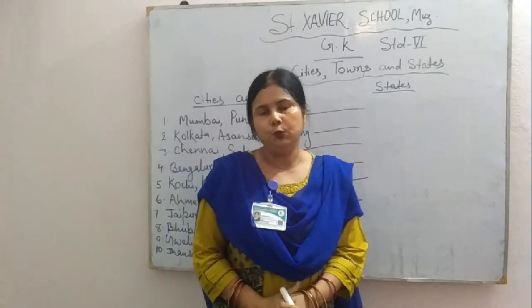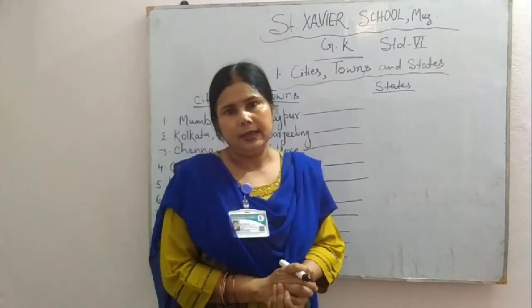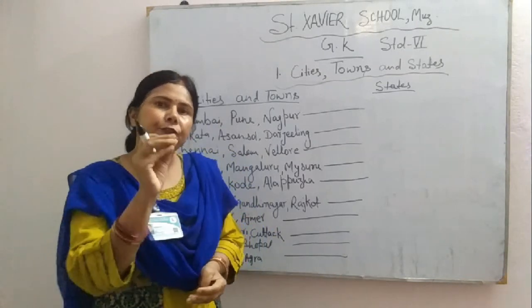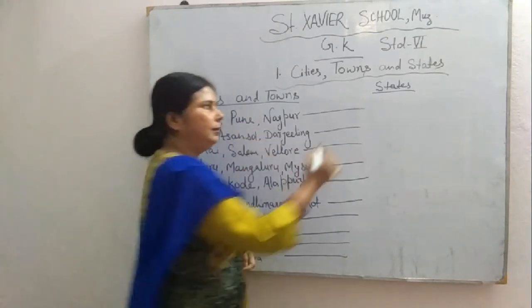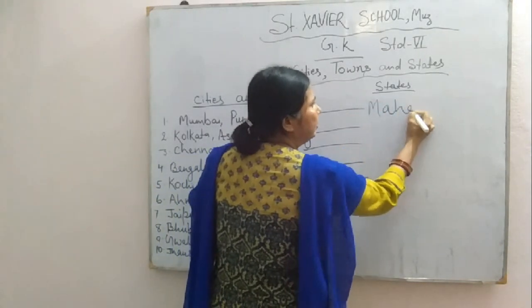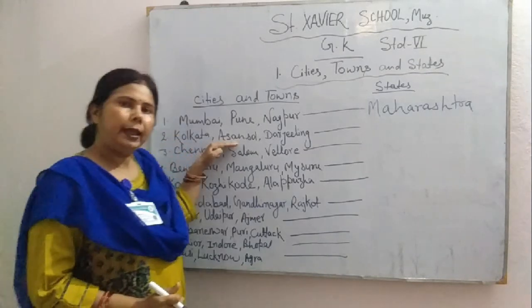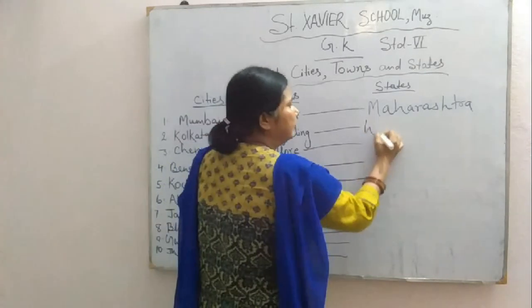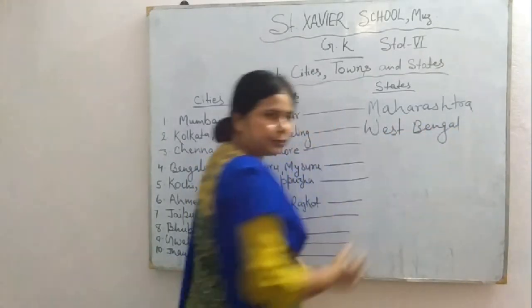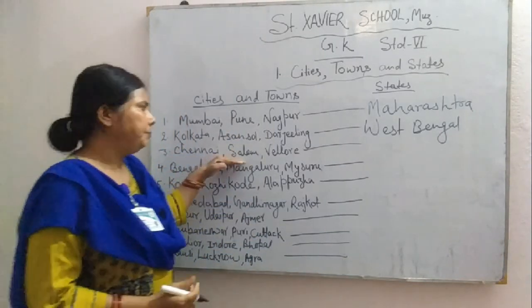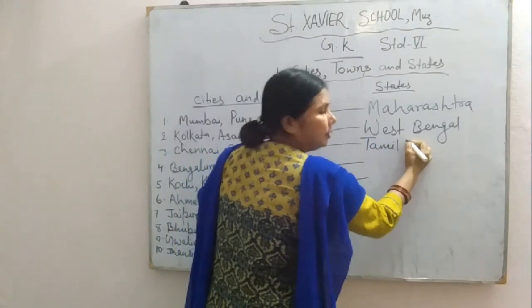Okay children, I hope you all could have matched all these cities with their respective states correctly. Now I am writing the answers and you verify your answers with mine. Mumbai, Pune and Nagpur are in Maharashtra. Kolkata, Asansol and Darjeeling are in West Bengal. Next: Chennai, Salem and Vellore are in Tamil Nadu.